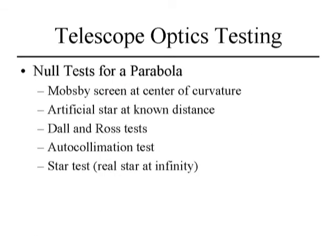Those tests define the parabola by measuring spherical aberration. What's more interesting is null tests. When you have a null test, you have just one test answer — no interim results requiring further analysis. A sphere at the center of curvature is a null test: with a knife you get uniform graying, with a Ronchi screen you get straight parallel lines — you either have them or you don't. Several tests produce a null return: the Mobsby screen at center of curvature, a distant artificial star, the Dall-Kirkham and Ross test, the auto-collimation test — which is in my opinion the best and the one we use here in the workshop — and the star test.